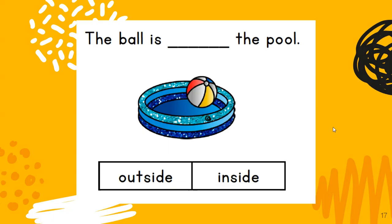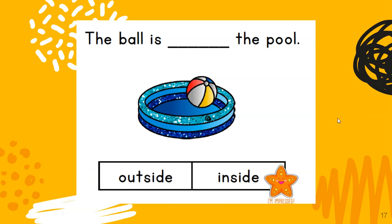Now let's check and see how well you know your positional words. The ball is in the pool — how would you describe the ball? Your choices are outside or inside. What do you think? Inside. The ball is inside the pool.